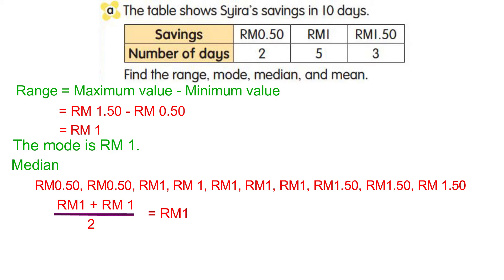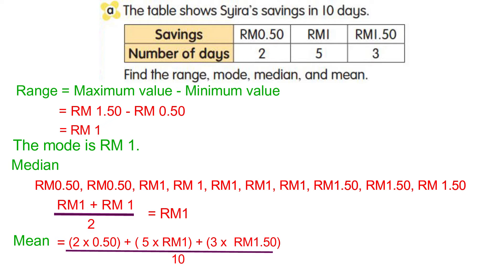Now find the mean. To find the mean, find the total saving for 10 days. The total saving is 10 ringgit 50 cents divided by the total number of days, that is 10 days. So the mean will be 1 ringgit and 5 cents.